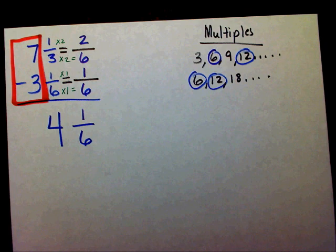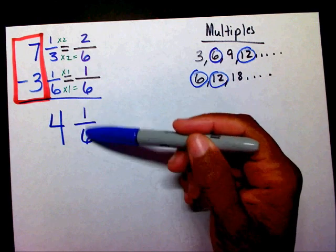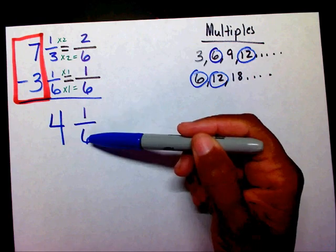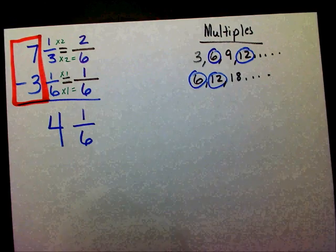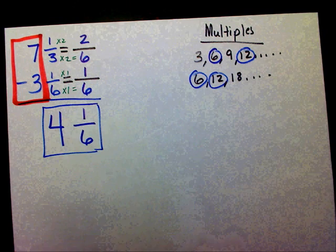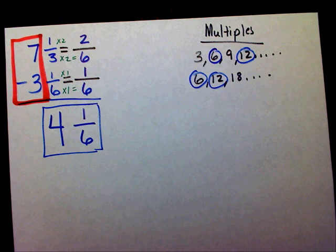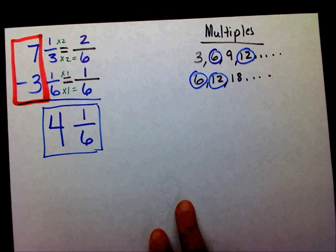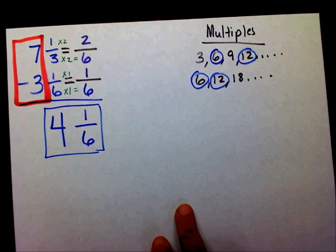And I know for a fact that 1 sixth is already in lowest terms. So therefore, my final answer is going to be 4 and 1 sixth. Let's work another one. I'd like for you to solve it and work this one. I'd like for you to work this one.